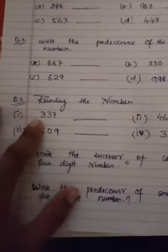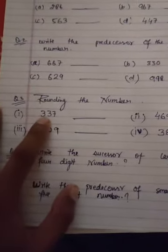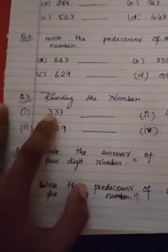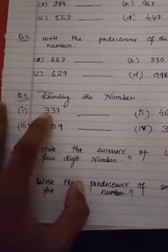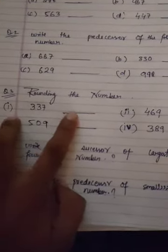Rounding the number: you have to round the number to the nearest hundred. Like 337 is given here, so it is nearer to 300, then your answer is 300. The rest of all you can solve easily.